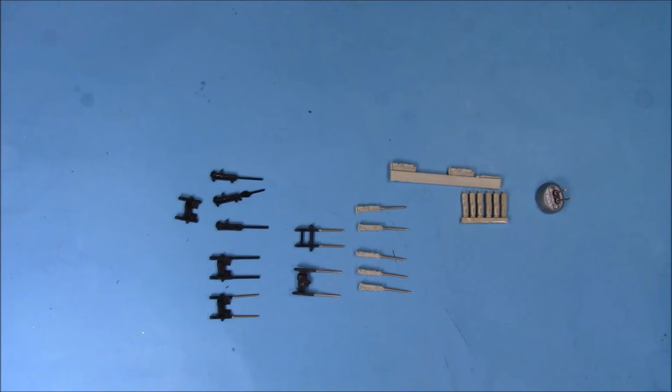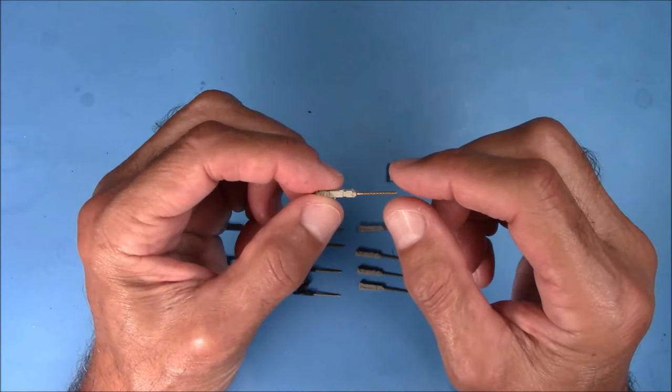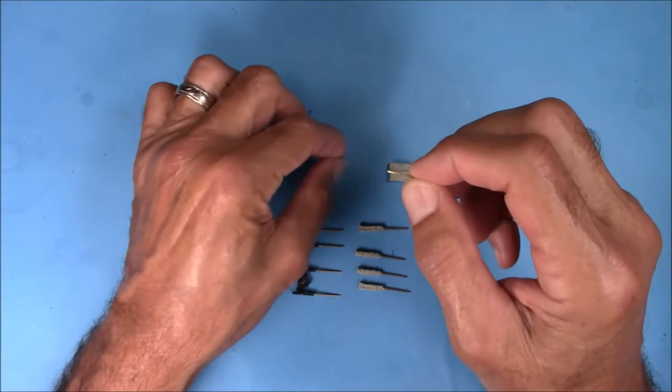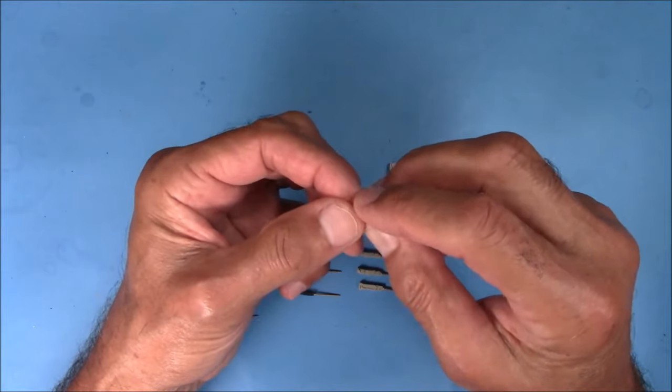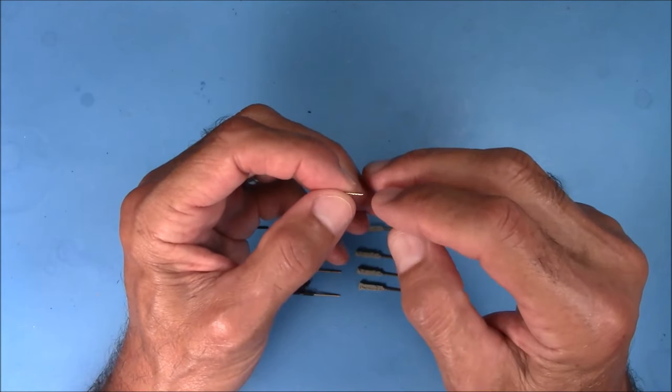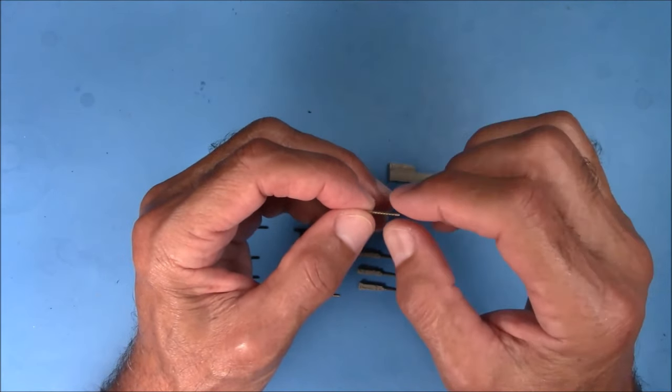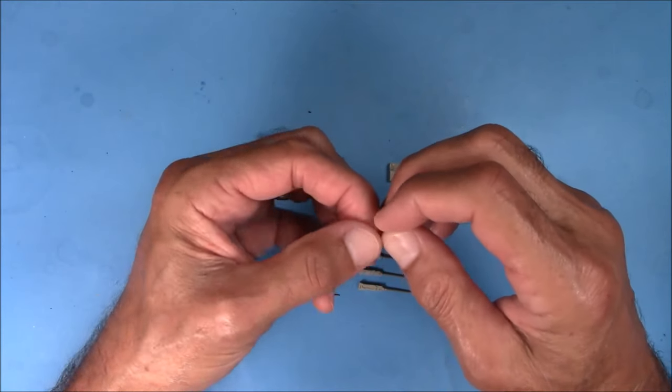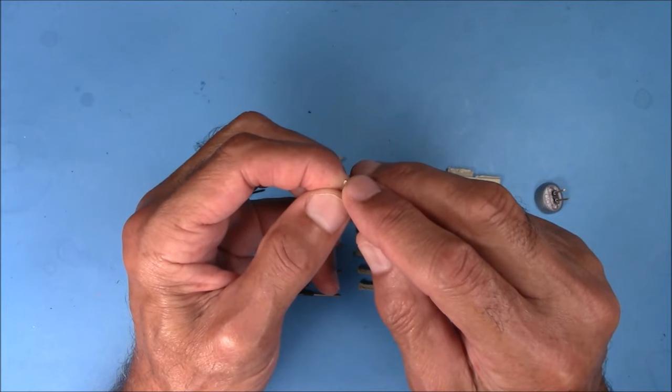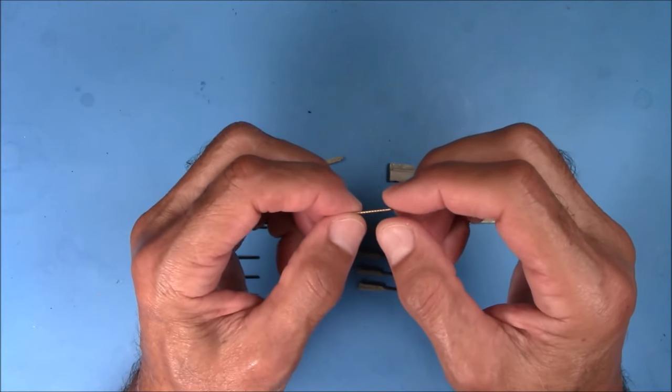The .50 caliber machine guns that come with the kit can definitely be improved by adding these Masters two-part brass barrels. They're very easy to assemble. They come in two parts. You have the outer jacket and then the inner part, which is the barrel. To prepare them for assembly, all you need to do is ream out the inside of the jackets, because sometimes there's tiny burrs in there, and then this slips into place. You glue it with just a tiny drop of super glue right there, and just kind of roll it on your hand to get rid of the excess glue, and you're done.